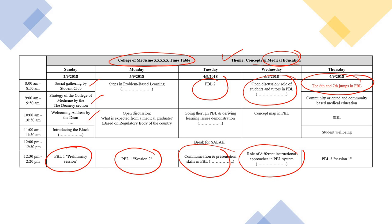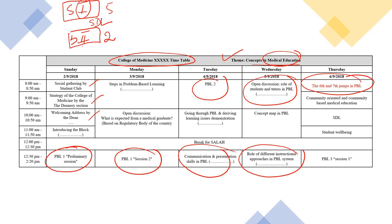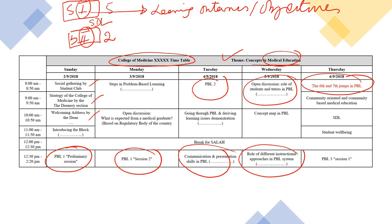In PBL there are two sessions: session one and session two. In session one there are five steps, and in session two there are two steps — these are the seven jumps of PBL. Students prepare through self-directed learning between sessions. In each tutorial session, students will frame learning outcomes or learning objectives.